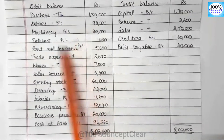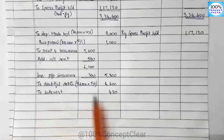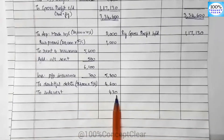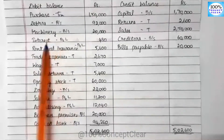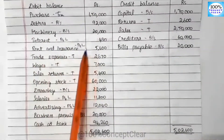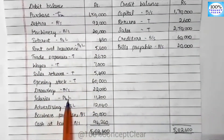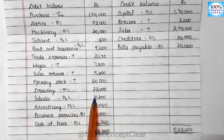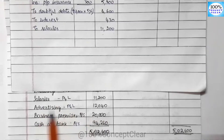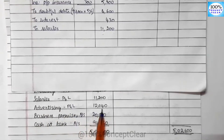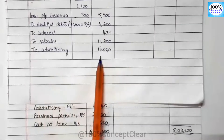Trial balance items for P&L account: interest is $430. Next, rent and insurance. Next, we have salaries at $11,200. Next, we have advertisement at $12,040. Debit side of P&L account is now complete.